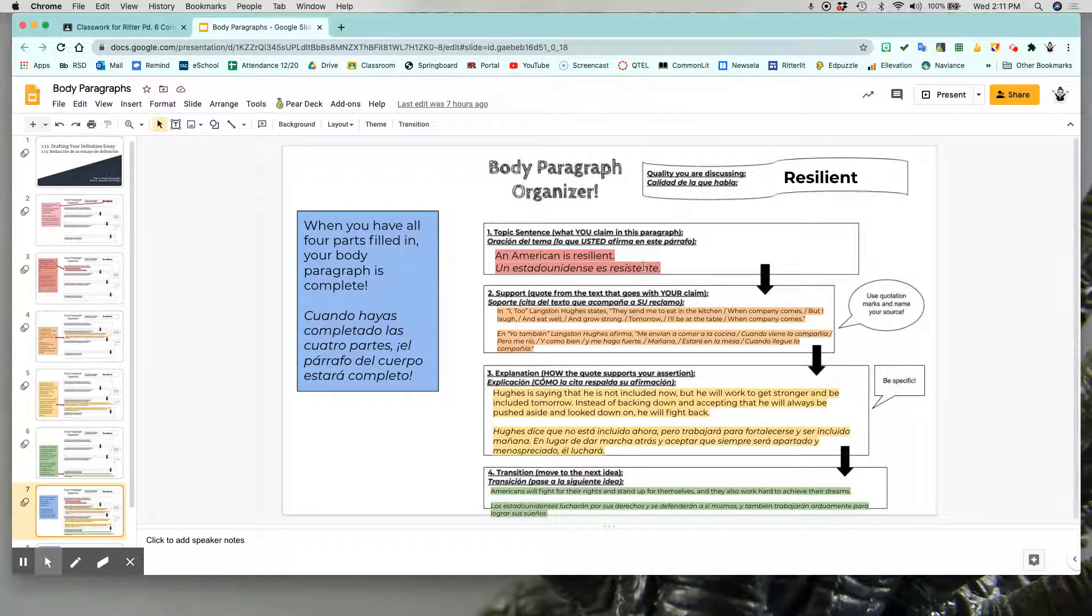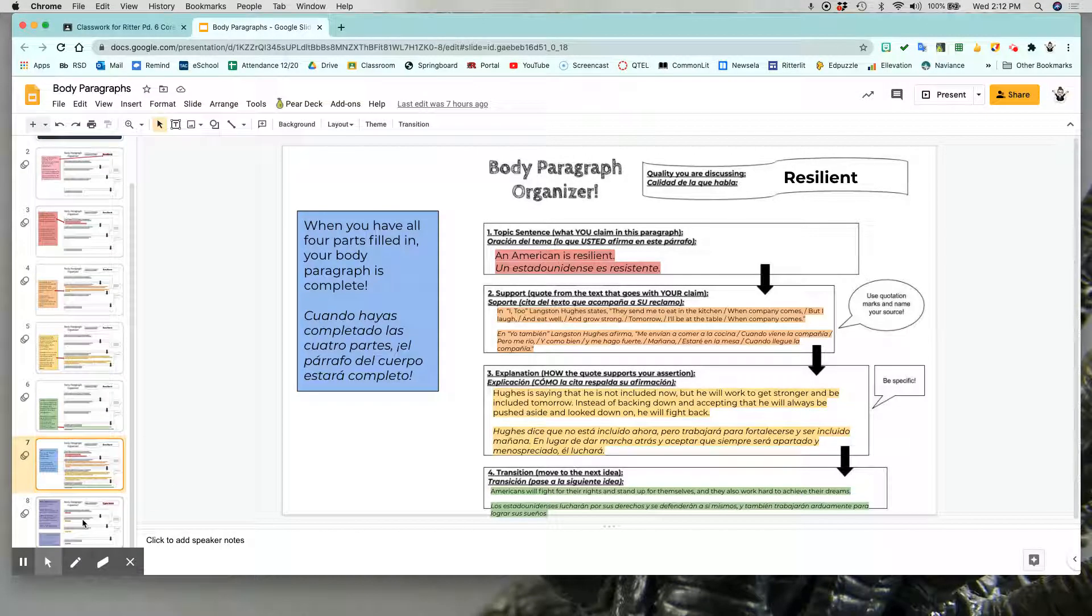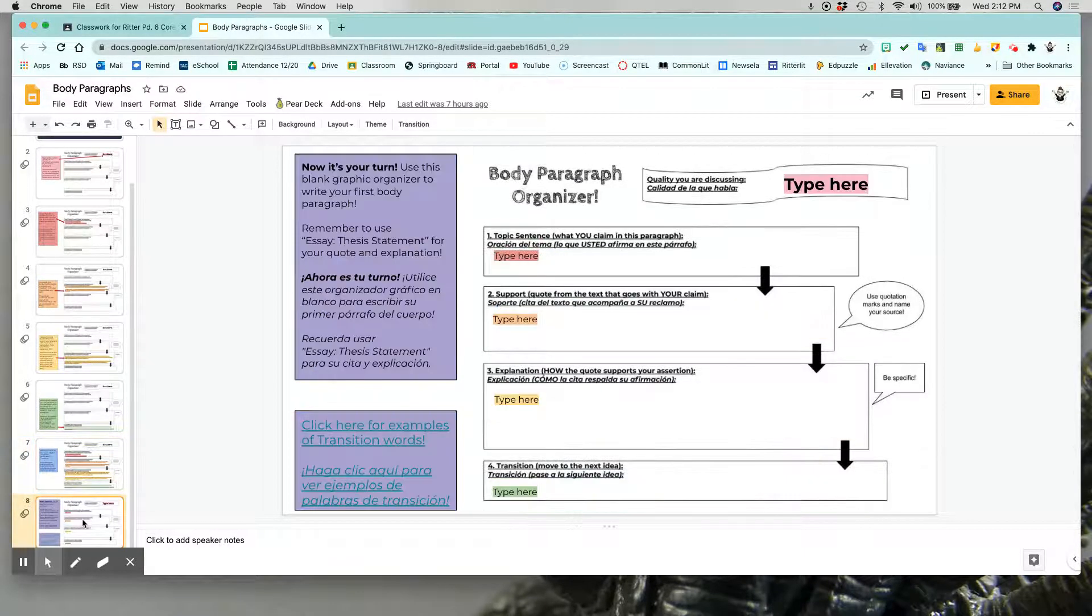Once you have all five of those things filled in—your flag and then these four pieces—that is your body paragraph. All you need to do is put it together into paragraph form in NoRedInk. So the last slide here is a place for you to type in your first body paragraph. You will just replace these little type here placeholders with whatever you are saying.